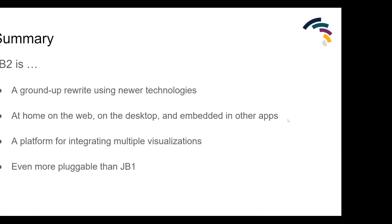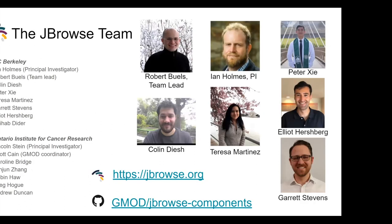In summary, JBrowse2 is a ground-up rewrite of JBrowse - all new code. It's equally at home on the web, on the desktop, or embedded in other apps. You can integrate multiple visualizations in the same view and write your own visualizations that integrate with the out-of-the-box ones because it is even more pluggable than JBrowse1. That is the end of my talk - here's the awesome team that built all of this, and we're happy to answer any questions.